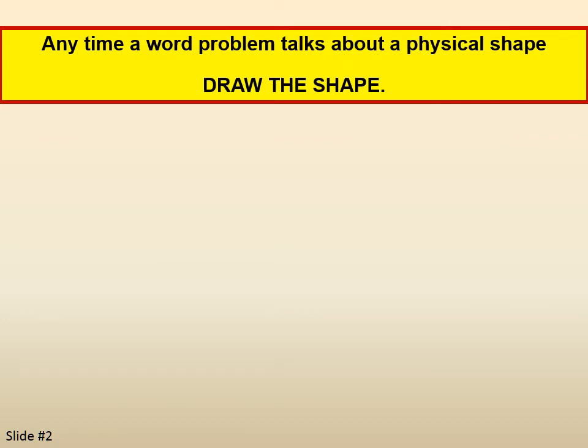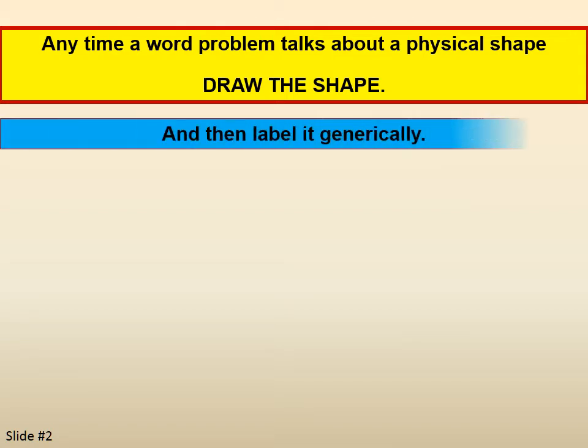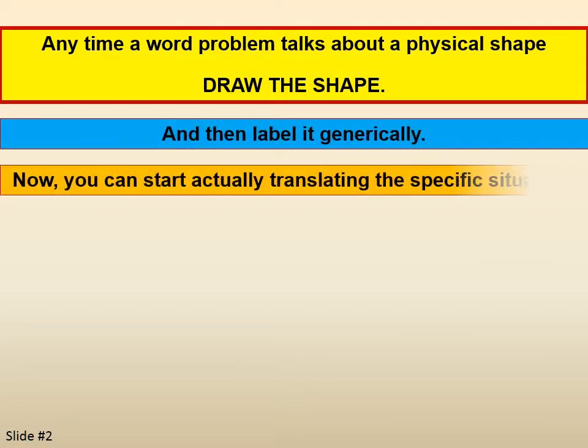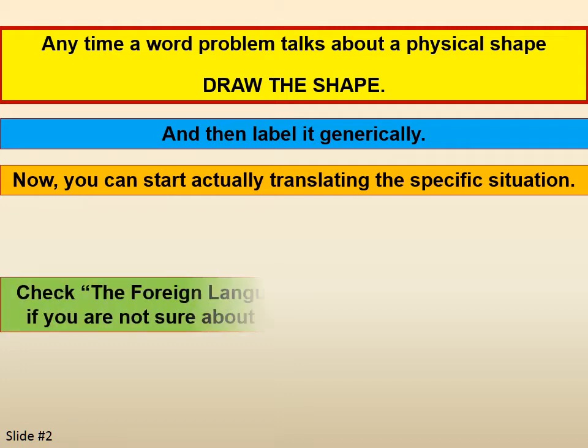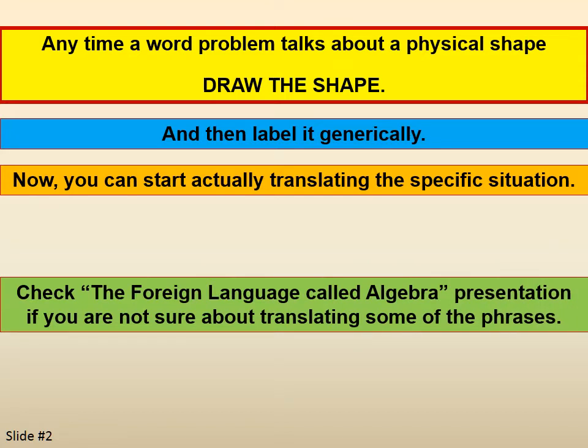Any time a word problem talks about a physical shape, draw the shape, and then label it generically. Now, after you've done that, you can start actually translating the specific situation that the problem represents. Make sure you check the foreign language called algebra presentation if you're not sure about translating phrases.